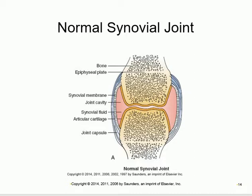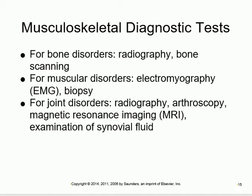Reviewing the joint structure: the articular cartilage is the yellow layer, the joint cavity contains fluid, and the capsule surrounds everything. For diagnosing musculoskeletal problems - musculo refers to muscles, skeletal refers to bone. For bones, you use radiography or scanning. For muscles, there is electromyography (EMG), which is important to know.